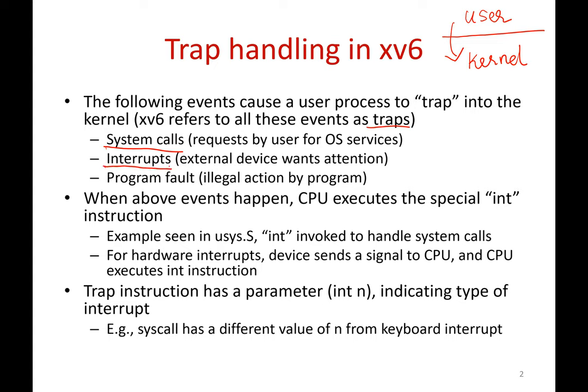Another example of a trap is an interrupt. An external hardware device wants the attention of the operating system. For example, a packet has arrived on the network card, and the network card wants to hand that packet over to the operating system, so it raises an interrupt. The next kind of traps are what are called program faults — that is, your program has accessed some memory it is not supposed to access. There is a segmentation fault. Some illegal action by the program also causes a trap into the operating system.